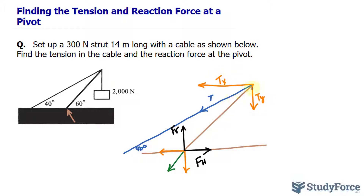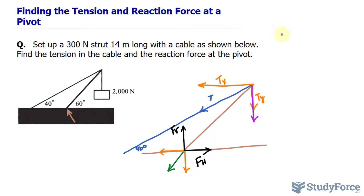There's also a weight hanging down, and that weight is 2,000 newtons. When it comes to adding up the forces along the vertical, we would have to include that as well, in addition to the weight of the strut, which is 300 newtons as given in the question.